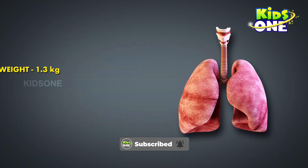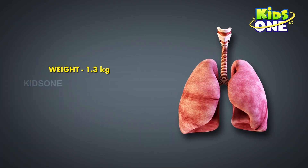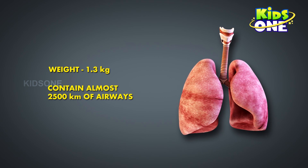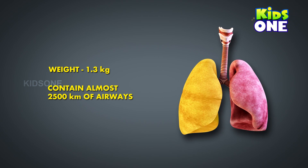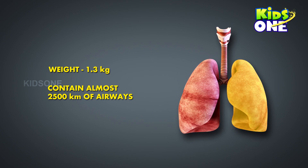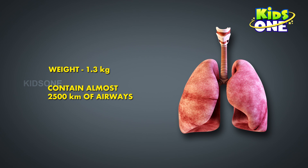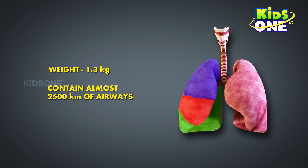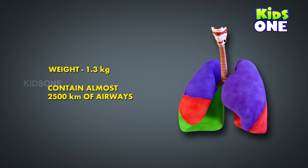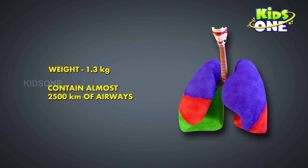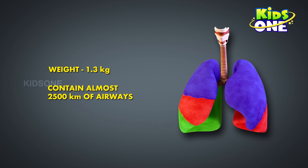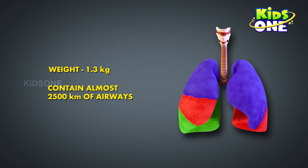The lungs weigh around 1.3 kg and contain around 2,500 km of airways. The right lung is a little larger and heavier than the left one because the left one needs to leave room for the heart. The right lung is subdivided into three lobes while the left has just two. However, the left lung has a structure homologous to the middle lobe of the right lung. On the left lung, the upper lobe has a projection called the lingula.